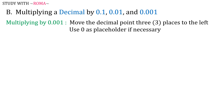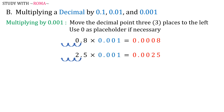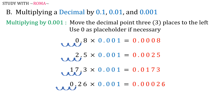When multiplying a decimal by 0.001, move the decimal point three places to the left, and use 0 as a placeholder if necessary. For example: 0.8 times 0.001 is equal to 0.0008; 2.5 times 0.001 is equal to 0.0025; 17.3 times 0.001 is equal to 0.0173; 0.26 times 0.001 is equal to 0.00026; and 4.28 times 0.001 is equal to 0.00428.